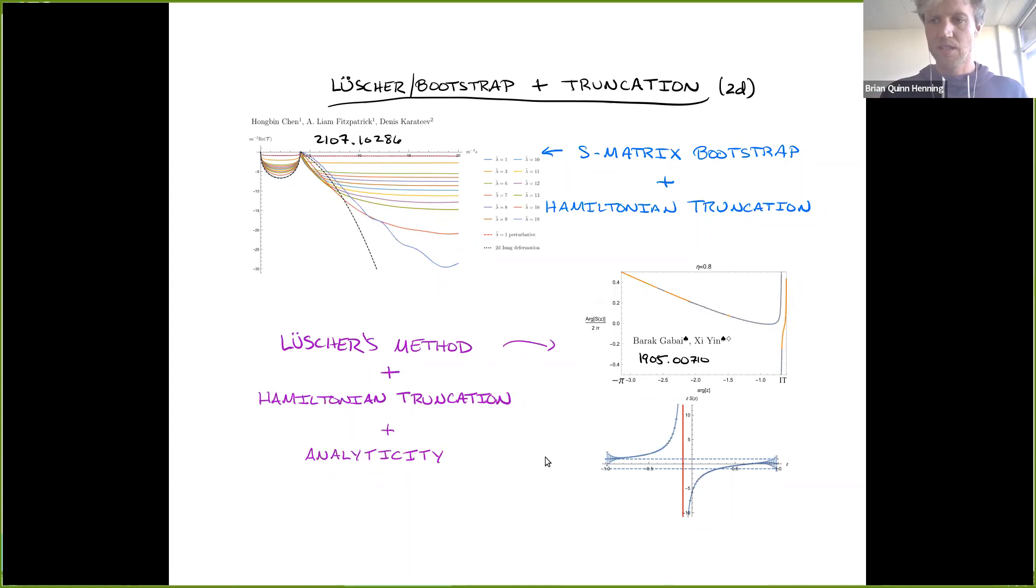Now, I'll tell you what truncation actually is in a second, but people have also started using Hamiltonian truncation as input into other methods. So in two dimensions, this group here, Liam and Dennis and Hongden, are studying phi to the fourth theory in 2D. And they can compute the S matrix by using Hamiltonian truncation to compute a bunch of states and actually compute form factors. So there are people who can compute S matrices. These are in 2D. But it's not like a perturbative type problem. Like here's your Lagrangian, let me go forward. That's kind of what I'm looking for.